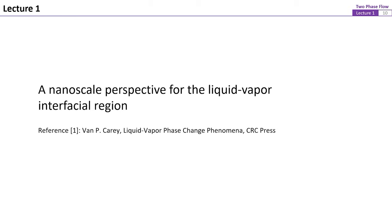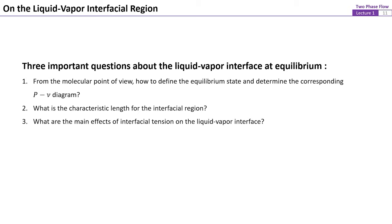Now let's discuss the nanoscale perspective for the liquid-vapor interfacial region, which is Chapter 1 of the reference book. By studying this chapter, the goal is to answer three important questions about the liquid-vapor interface at equilibrium: First, from the molecular point of view, how to define the equilibrium state and determine the corresponding PV diagram? Second, what is the characteristic length for the interfacial region? Third, what are the main effects of interfacial tension on the liquid-vapor interface?